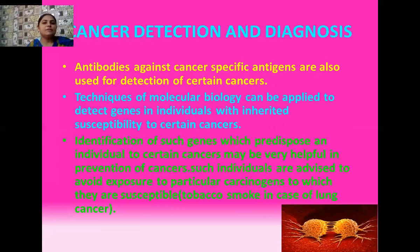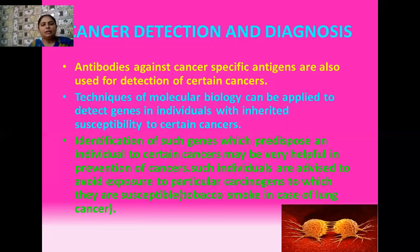Identification of such genes is quite helpful in the prevention of different types of cancers. Sometimes doctors advise persons about particular carcinogens — for example, whenever a person buys a packet of cigarettes, it is written on the packet that smoking is injurious to health. The person knows very well that in the cigarette tobacco is there, and inside the tobacco nicotine is present, which is a cancer-causing agent or carcinogen. But still these people smoke, and later they suffer from throat cancer or lung cancer.